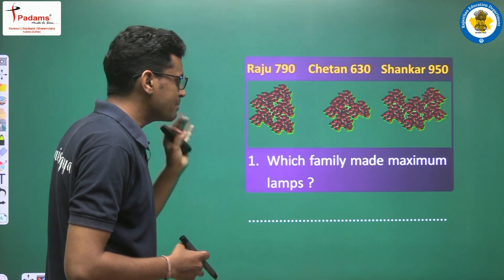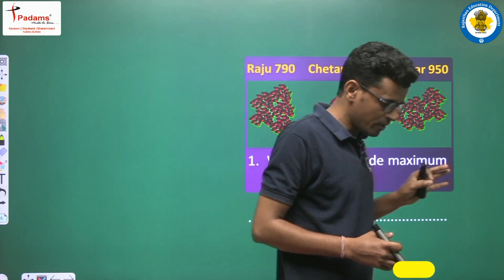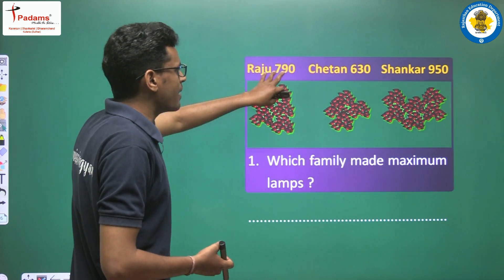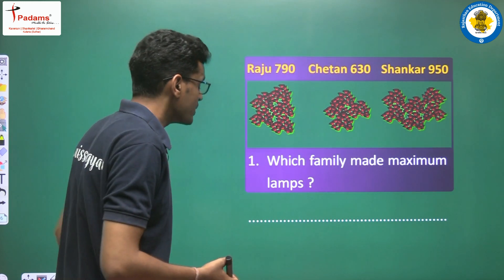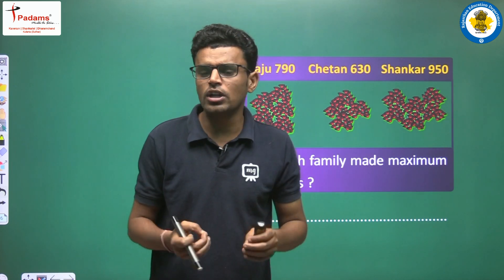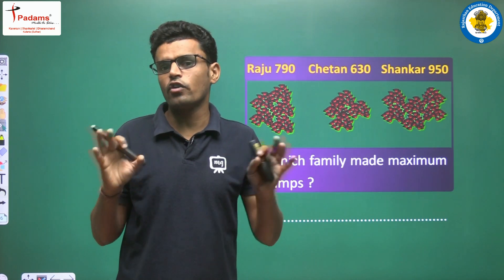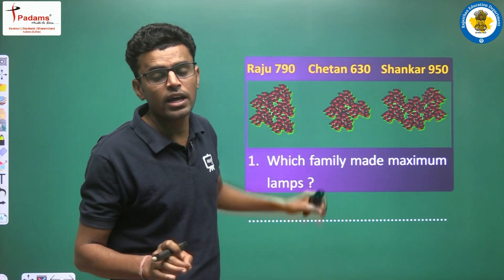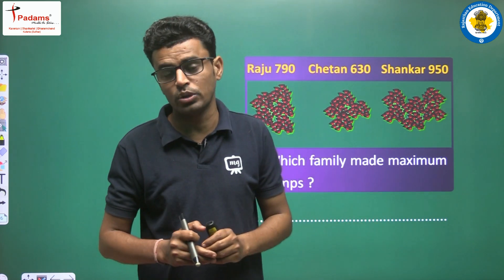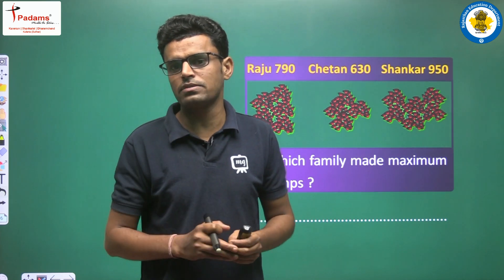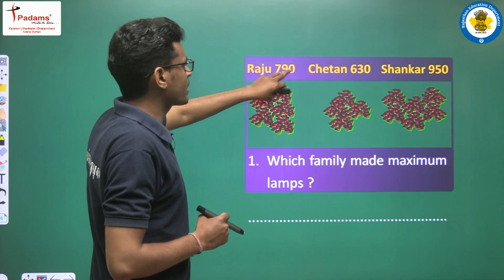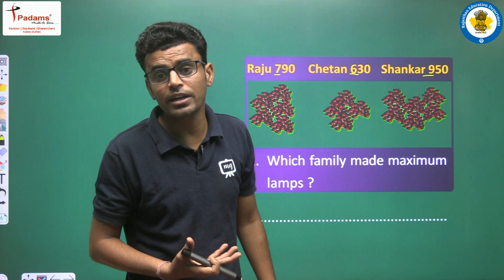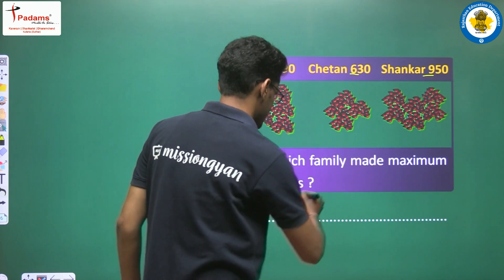The first question is: which family made the maximum lamps? Maximum means the largest amount — the biggest number. We are comparing 700 values, 600 values, and 900 values. When we compare numbers, we look at the biggest place value. The largest amount is 950, which belongs to Sankar's family. So Sankar's family made the maximum lamps.